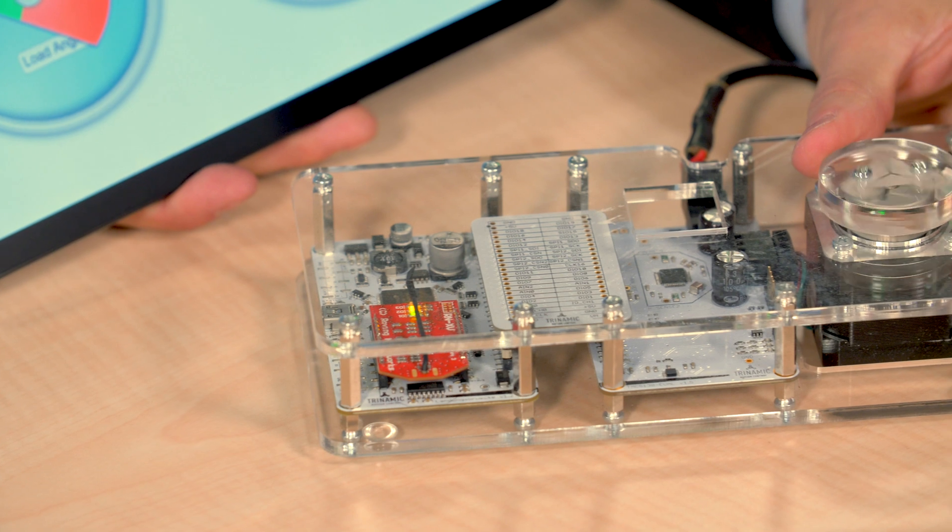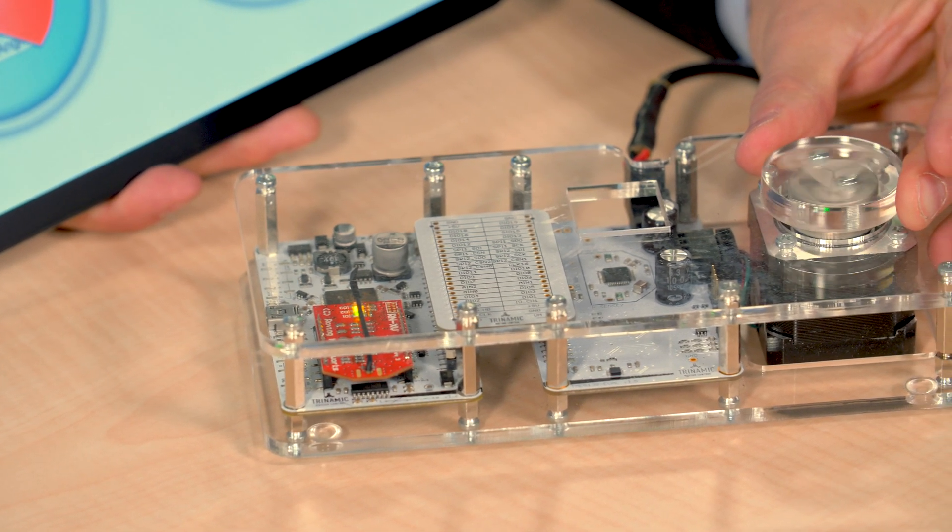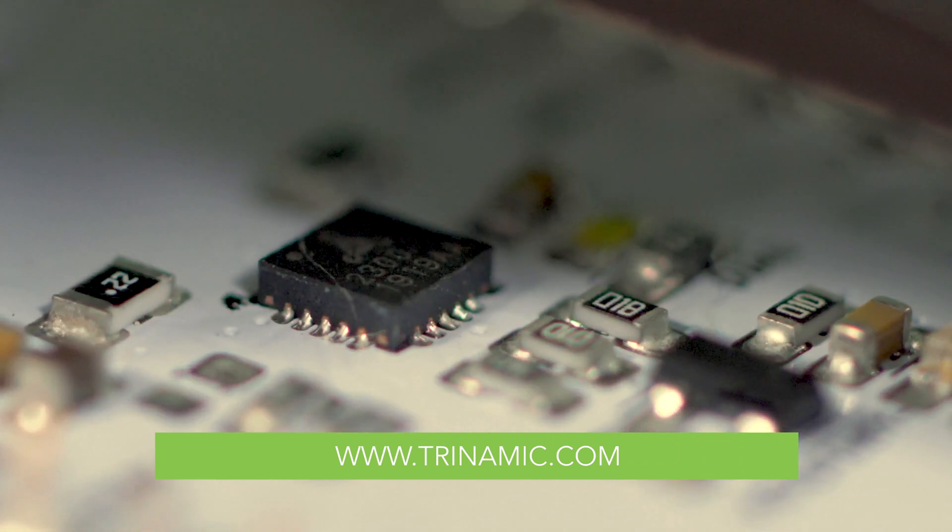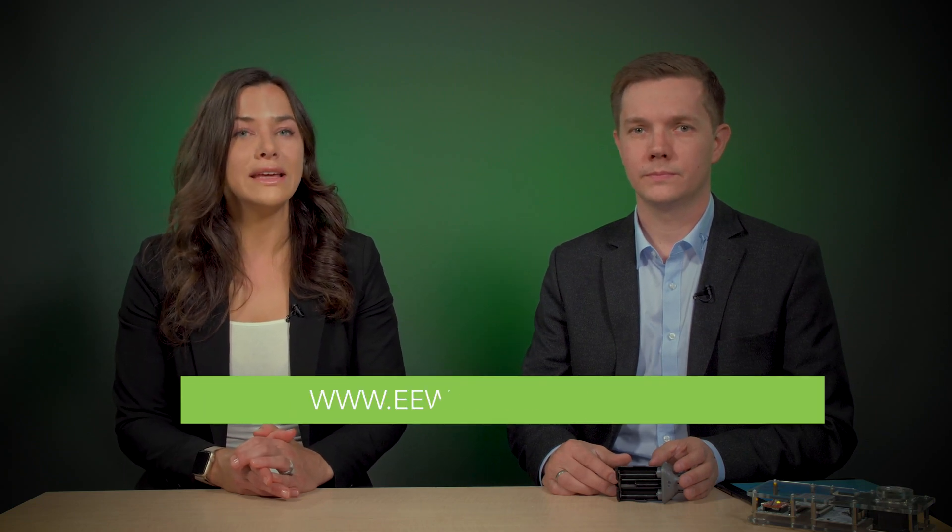And Jonas, where can our viewers get more information from Trinamic? For more information, go to trinamic.com. Please use one of the many contact options and just ask us. Awesome. And for more information from us, visit designworldonline.com or eeworldonline.com. Thank you for watching.